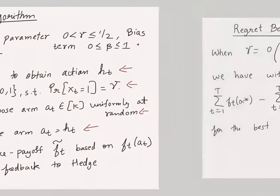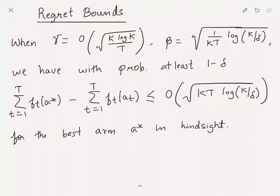The regret bound EXP3.P algorithm gets is as follows. You set gamma to be of the order square root k log k over t, and beta to be square root 1 over kt log k over delta for some known failure probability delta.